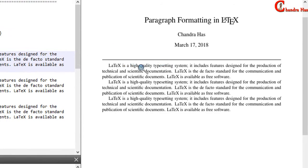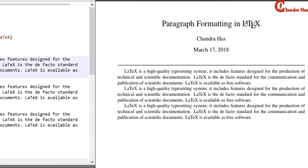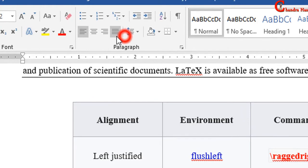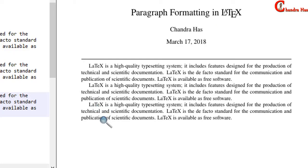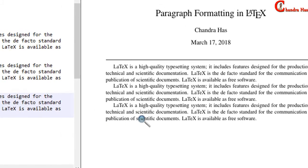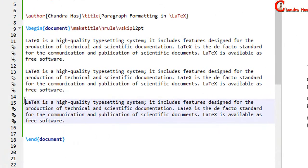So this is the fully justified justification — this is the default. Now for this paragraph, I want to use left alignment. For this, we can use either flushleft or ragged right. I will use ragged right here.